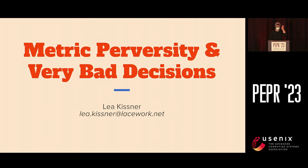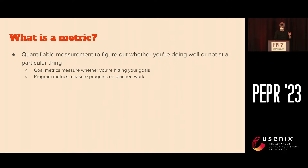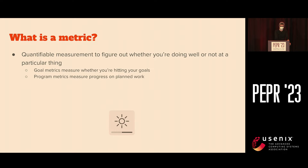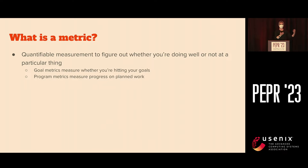So we're going to talk about this today. What's a metric? A metric is a quantifiable measurement to figure out whether you're doing well or not at a particular thing. Now there are two fundamental types of metrics. There are goal metrics — those measure if you're hitting your goals. So for example, if you wanted to make a lot of money, which I hear a rumor people like to do, your metric might be: how much money am I making?